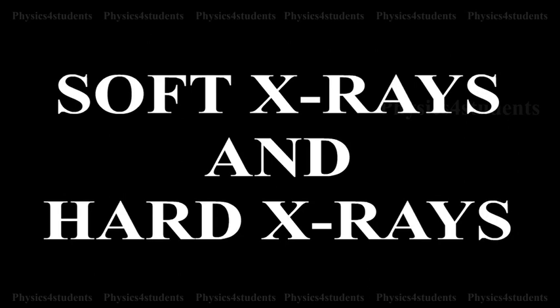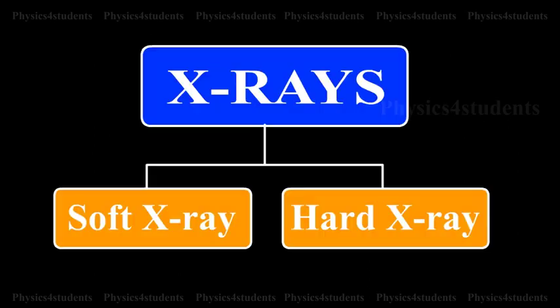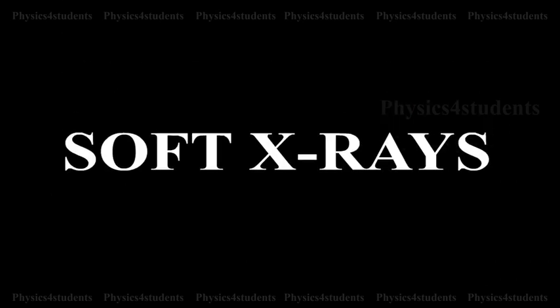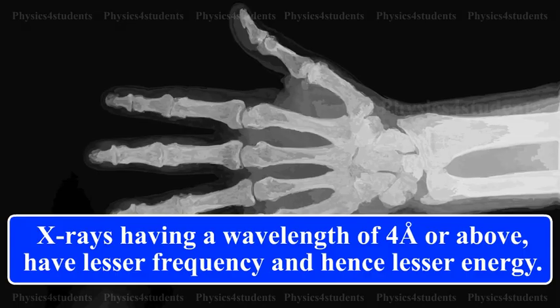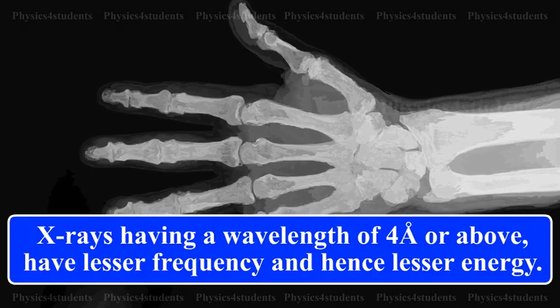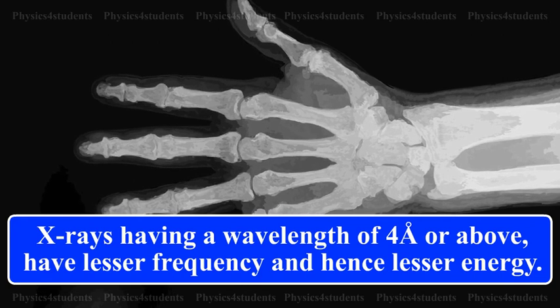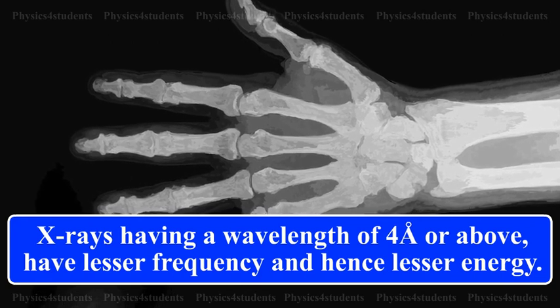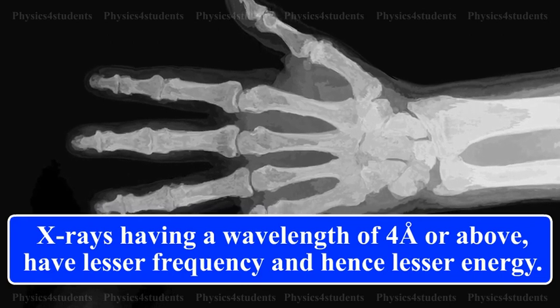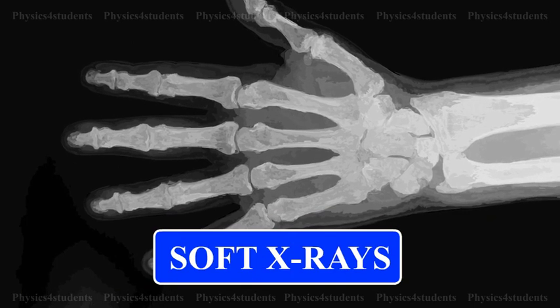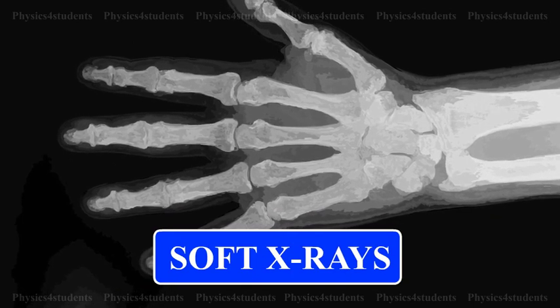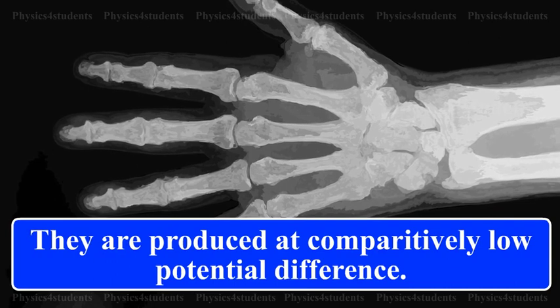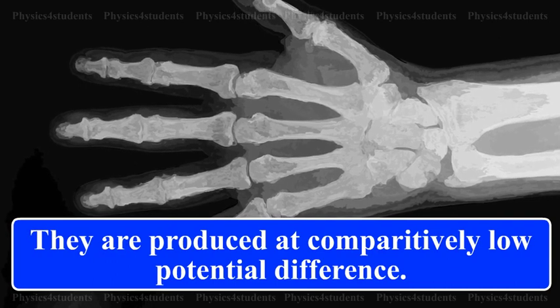Soft X-Rays and Hard X-Rays. X-Rays are of two types: Soft X-Rays and Hard X-Rays. X-Rays having wavelength of 4 angstrom or above have lesser frequency and hence lesser energy. They are called soft X-Rays due to their low penetrating power. They are produced at comparatively low potential difference.